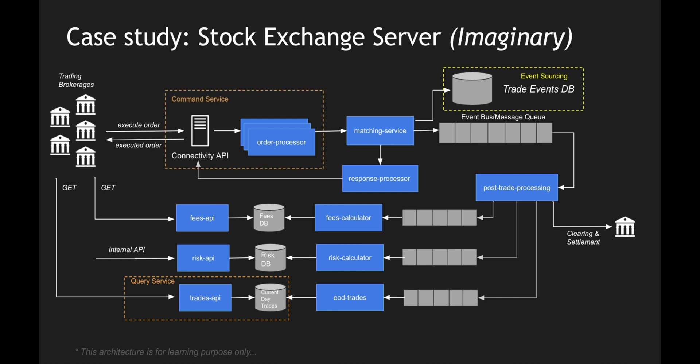The command service is where you tell the system what needs to be done — usually an update or create operation. In this use case, execution of an order is a command service where we are creating an order. You can also amend — if you place an order and then immediately change it, that is also a command. Using the command service is where you write data into the trade events database, which also flows into the current day trades.